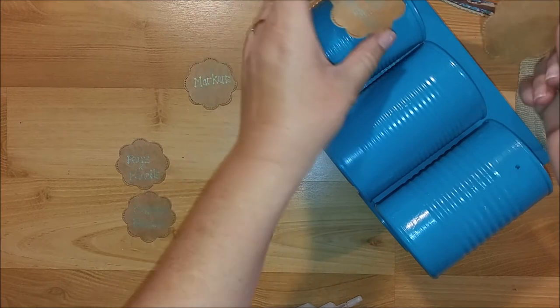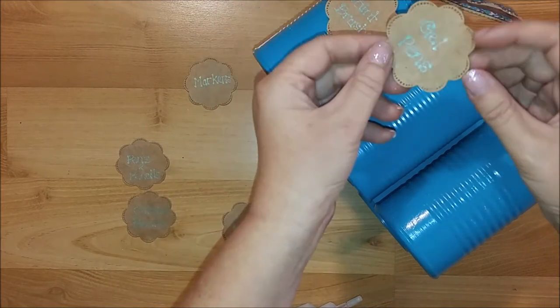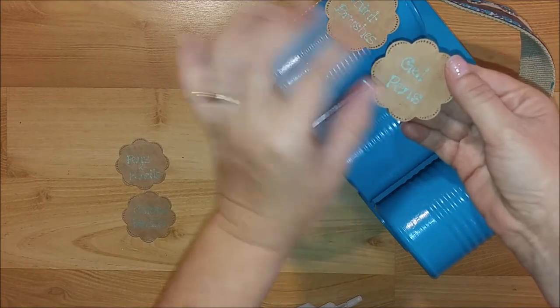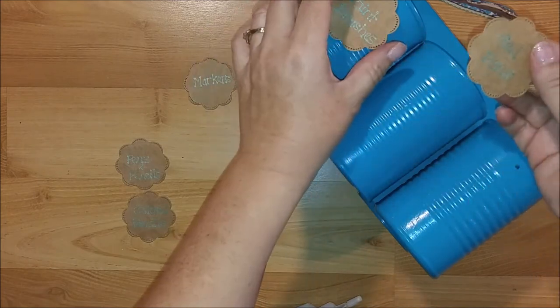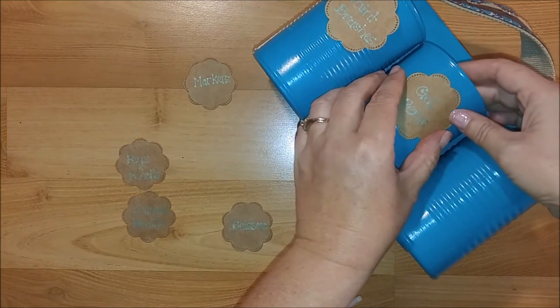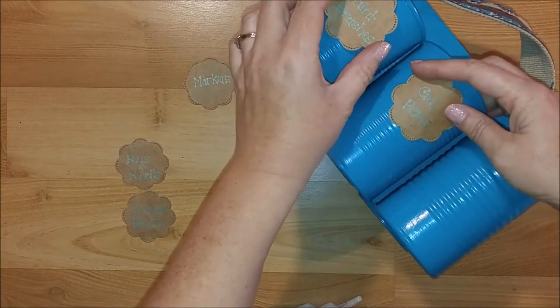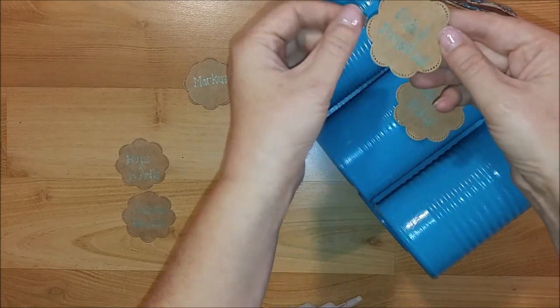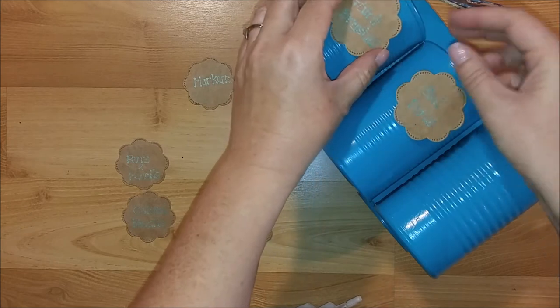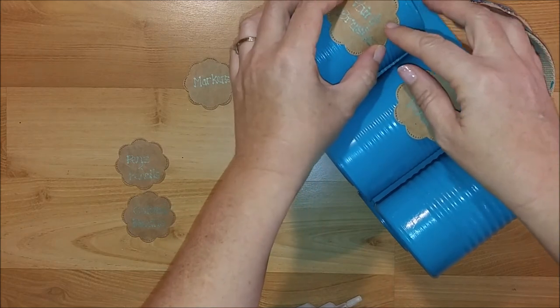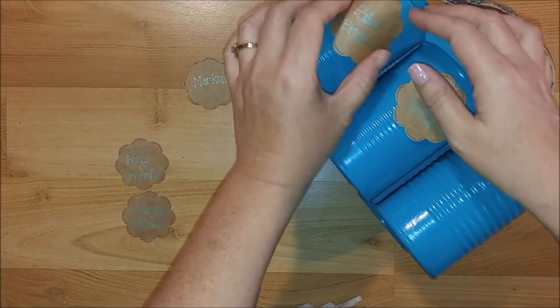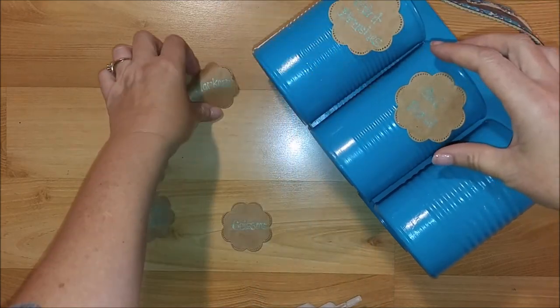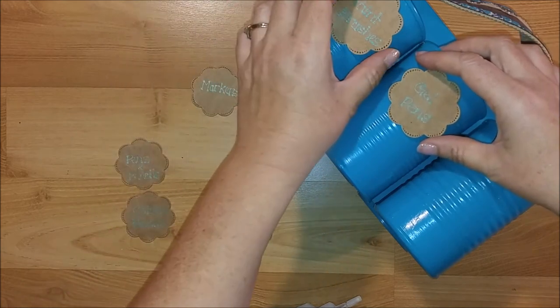And if you had chalk paint you could paint some paper or card stock with your chalk paint and then you could be able to reuse the labels. But I plan on using this for a while, so I just went ahead and used my markers onto the paper. And if I decide to change them out later I can just add labels on top or pull these off and redo them or whatever. So that's what I'm going to do, I'm going to go ahead and glue all of these on.